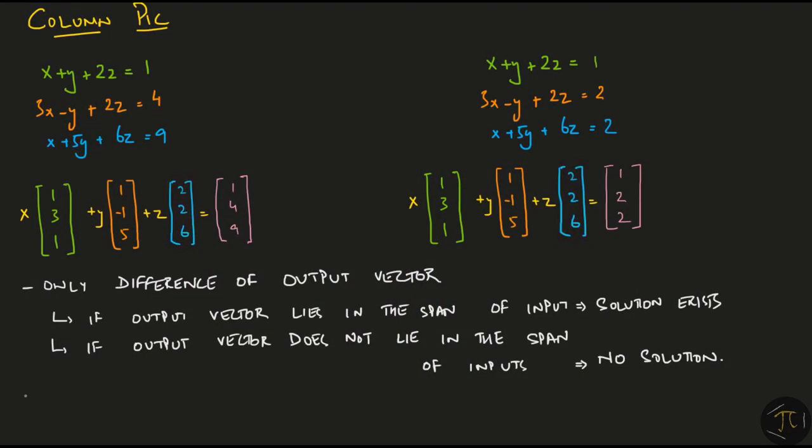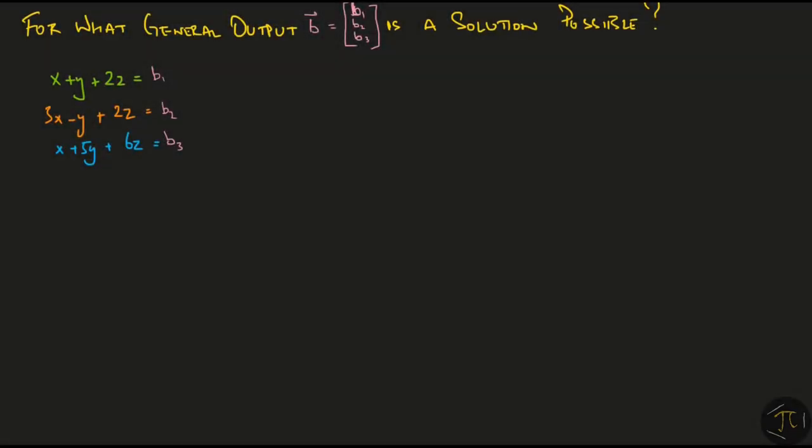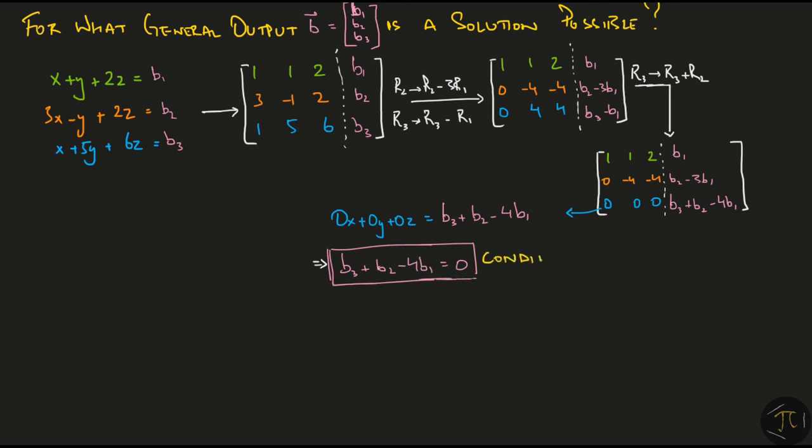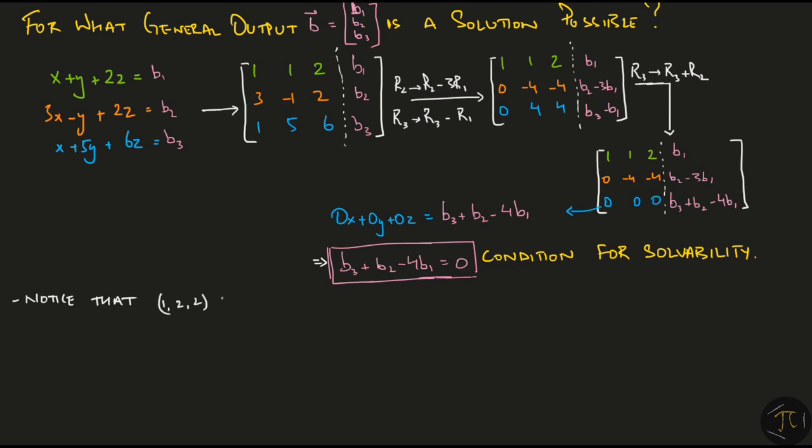Now, we can ask ourselves that if we are given a set of input vectors, for what general output vector b is a solution possible. So, when is this set of equations with b1, b2, b3 on the right hand side solvable? We carry the same old Gaussian elimination because once again the coefficient matrix did not change and we reached this final echelon form. This time though, the last equation says that 0x plus 0y plus 0z is equal to b3 plus b2 minus 4b1. So, b3 plus b2 minus 4b1 equals 0 is the condition for the solubility of the system. Notice that the point 1, 2, 2 satisfies this condition. In fact, if you replace the b's with x, y and z, this is the equation of a plane, the same plane that is spanned by the input vectors. Any time the output vector is a point in this plane, you are guaranteed to get a solution.